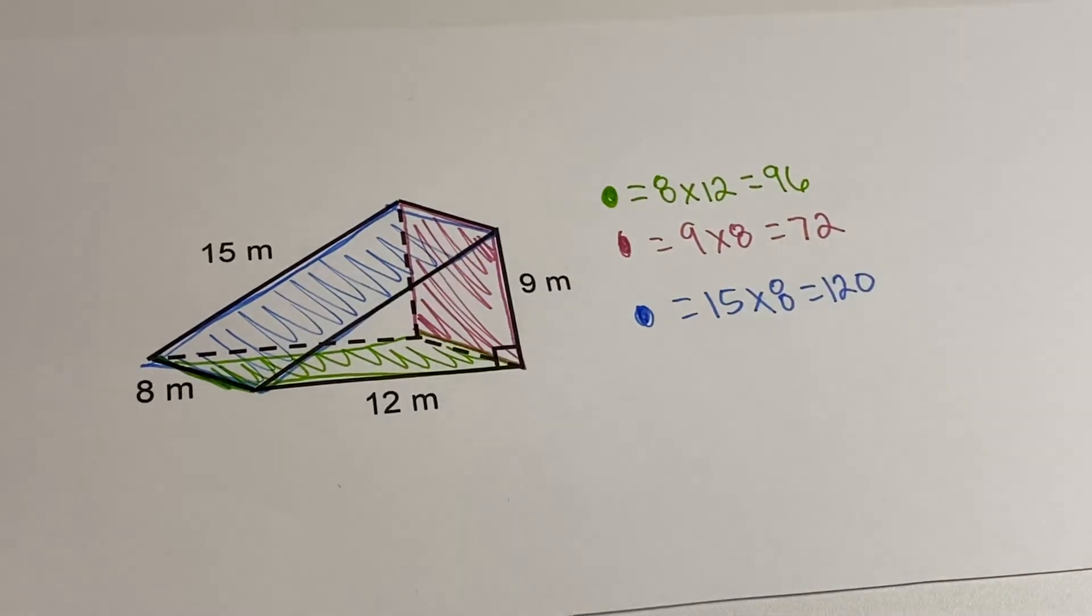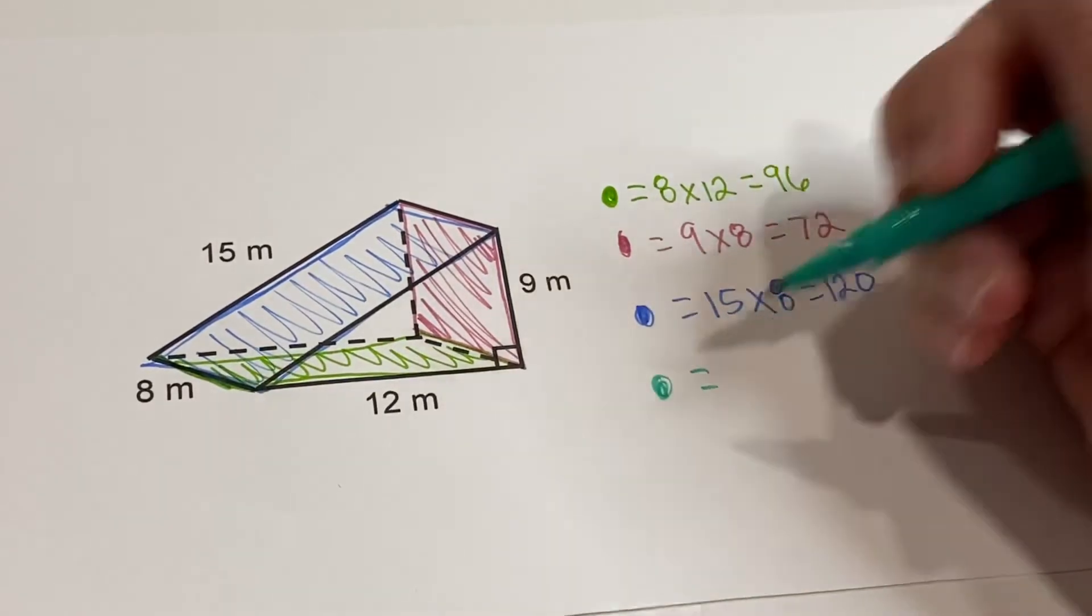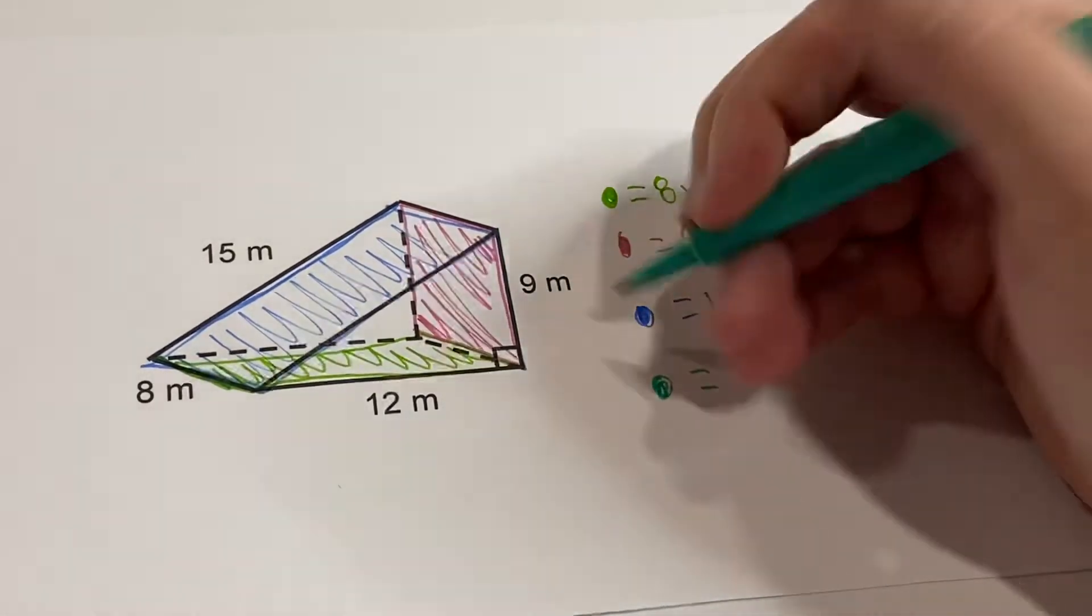So we have our three rectangles, and now we're going to do our triangles. The two triangles are the same. Maybe I should get a fourth color. Okay, so for our triangles, we're going to use this teal color.